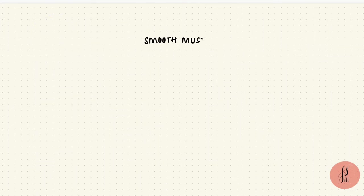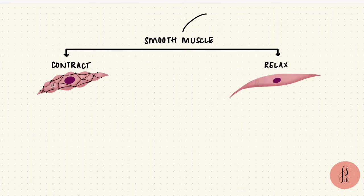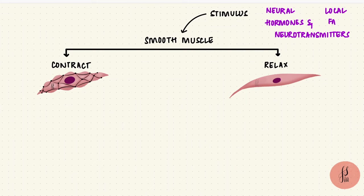Smooth muscles can be told to contract or relax, depending upon what the stimulus tells them to do. These are involuntary muscles. There are neural stimuli, that's the sympathetic and the parasympathetic nervous system, hormonal factors, neurotransmitters, and local factors like I mentioned earlier. Depending upon what the factor is and whether its receptor is excitatory or inhibitory, they can either cause smooth muscle contraction or relaxation.